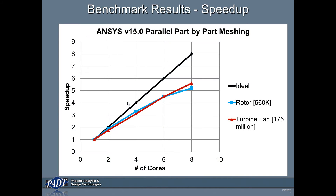If you look at the chart of the speedup, you can see that the black line is the linear idealized speedup, whereas the red and blue lines represent the two benchmarks I was able to complete. As you can see, with 8 cores you get roughly between 5 and 5.5 times speedup in the mesh time, which can be pretty significant and really useful in terms of time savings.